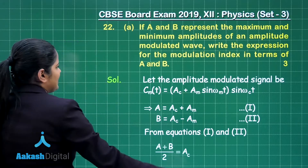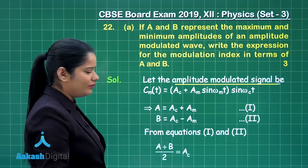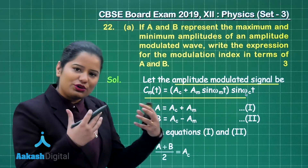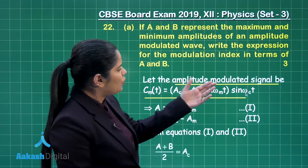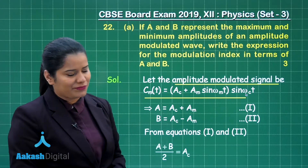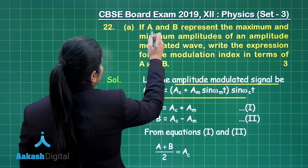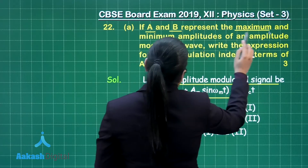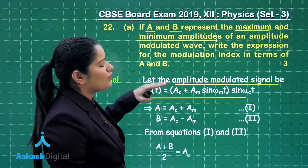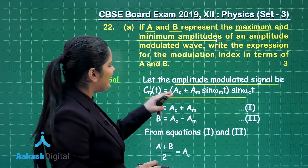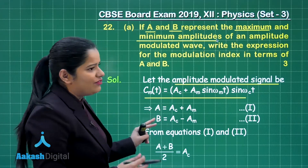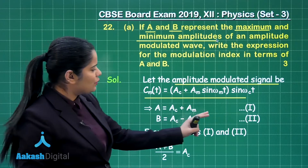For the solution, we consider the amplitude modulated signal given by a standard expression. In this expression, A_m is the amplitude of the modulating wave, A_c is the amplitude of the carrier wave, ω_c is the frequency of the carrier wave, and ω_m is the frequency of the modulating wave. The question states that A and B represent the maximum and minimum amplitudes. The maximum amplitude A equals A_c + A_m (equation 1), and the minimum amplitude B equals A_c − A_m (equation 2).